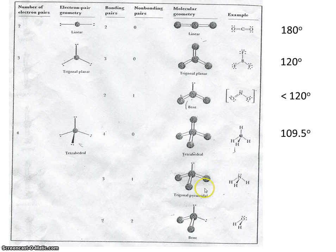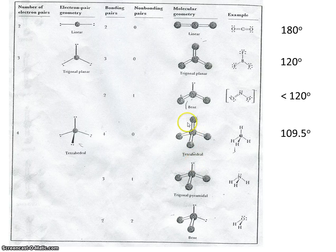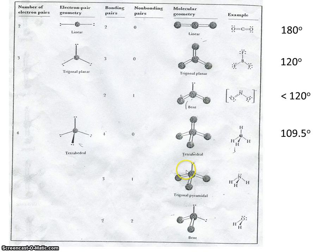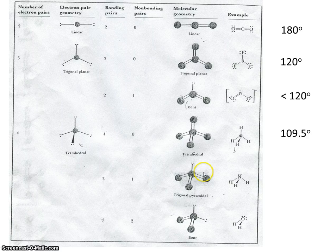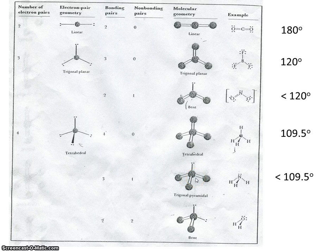Now, this next molecule also has four electron pairs. One, two, three, four. The difference is this is a lone pair. This is a bonding pair. As mentioned before, the lone pair takes up slightly more space than the bonding pair. As a result, it forces these atoms down just a little bit. So instead of this angle measure down here being 109.5, it's actually less than 109.5.